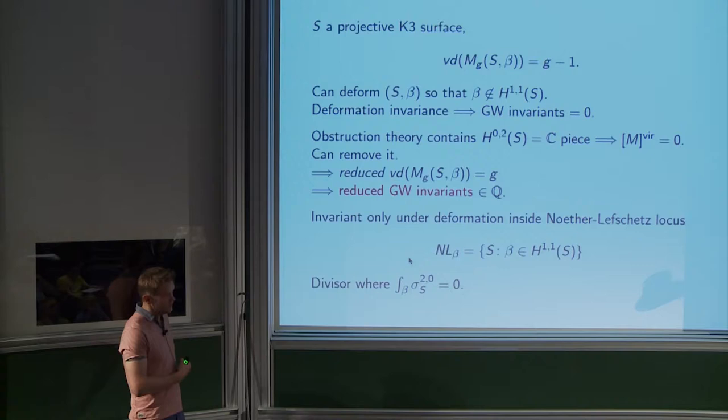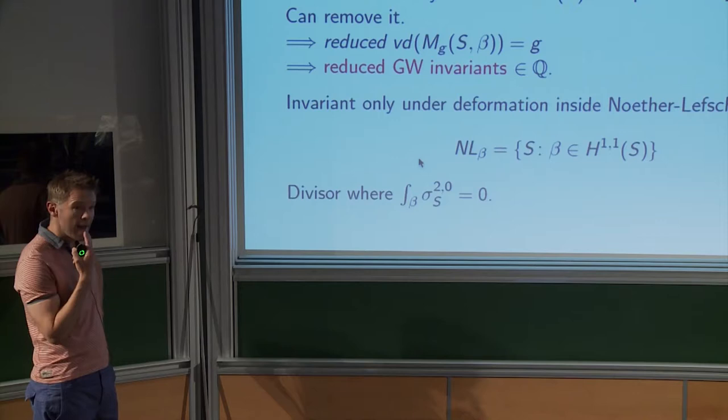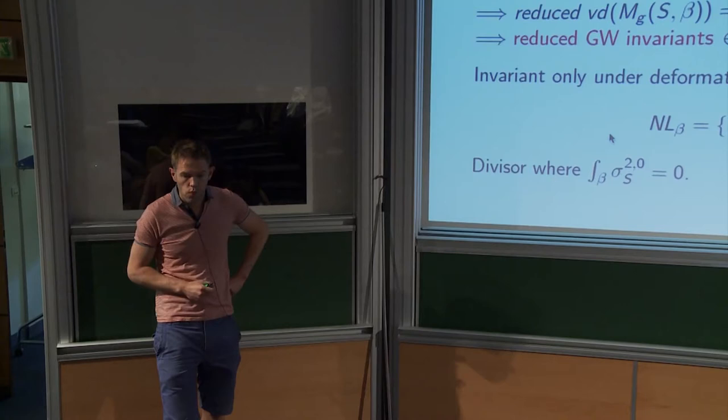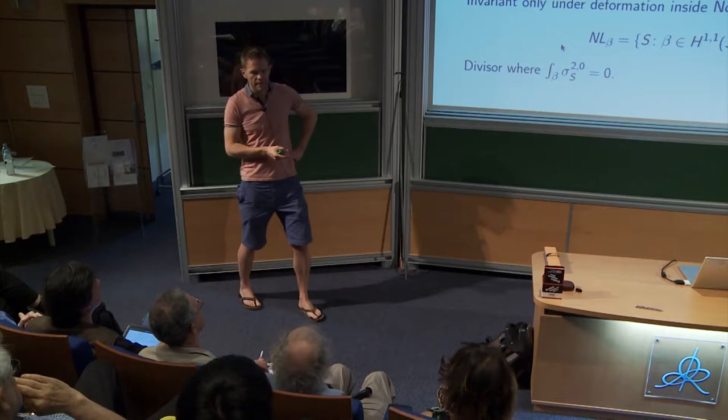You get reduced Gromov-Witten invariants. They're deformation invariant as long as you move the K3 surface within the locus in the moduli space where the class remains of type (1,1). This is called the Noether-Lefschetz locus — it's the divisor in the moduli space of K3s where the holomorphic two-form pairs to zero against the curve class. Symplectically all K3s are the same, so these are algebraic geometry invariants, but they can also be interpreted symplectically as we'll see.